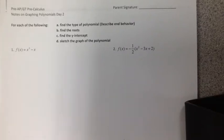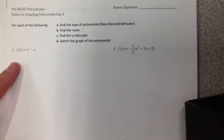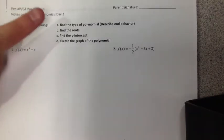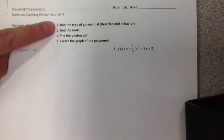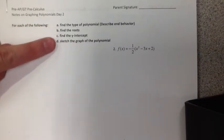On day two of graphing polynomials, we're going to be taking a look at polynomials that are in standard form. They haven't been factored yet. So for the first one, f(x) = x³ - x, we're going to do the same thing we've done in day one. We're going to find the type of polynomial, find the roots, find the y-intercept, and then sketch the graph.